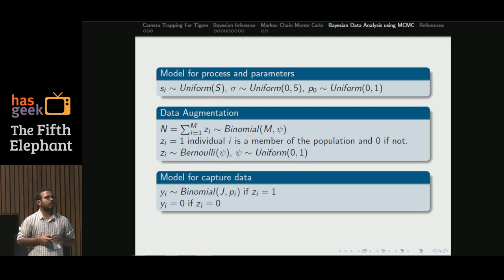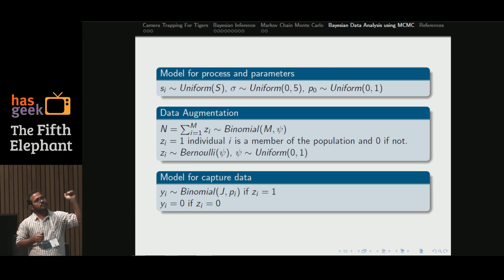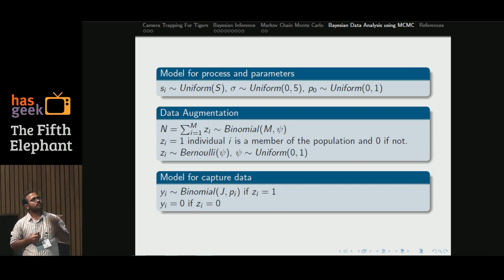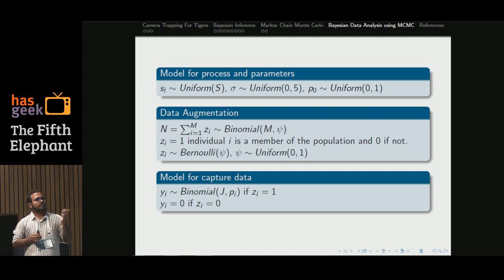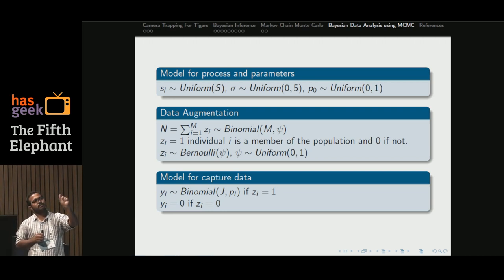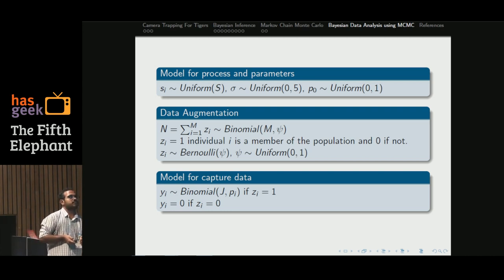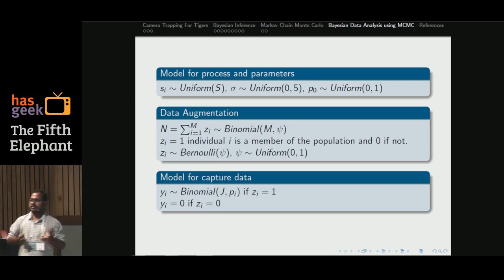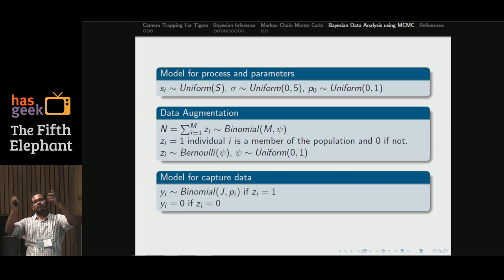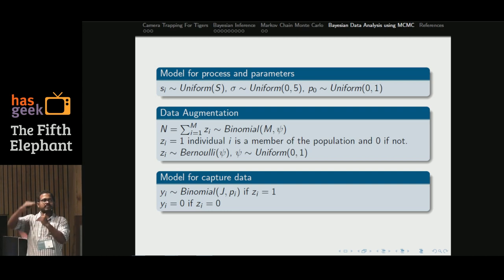For the modeling part, we assign prior distributions to each parameter. For the activity centers, since we have no information, we use a uniform prior. For sigma, the dispersal parameter, we use a uniform prior with range 0 to 5 units. The probability for the most exposed individual is uniform from 0 to 1, since it is a probability. Data augmentation assumes there is a super-population from which our population is a subset, and from that subset we get captured individuals — a three-layer assumption.